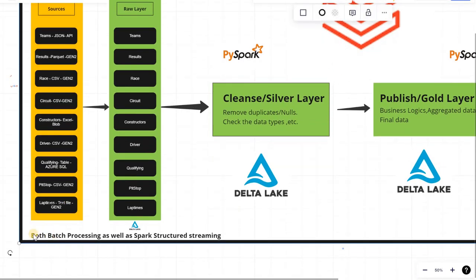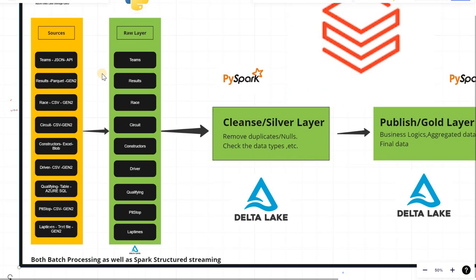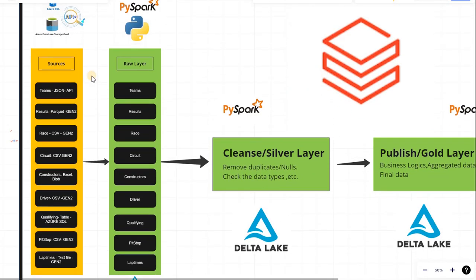You can see I have written both batch processing as well as Spark Structured Streaming. For the pit stop data, we will be using Spark Streaming to fetch the data in a real-time scenario. Apart from that, everything else — API, Gen2 result, race, and circuit data — will be processed via batch processing on a daily basis.